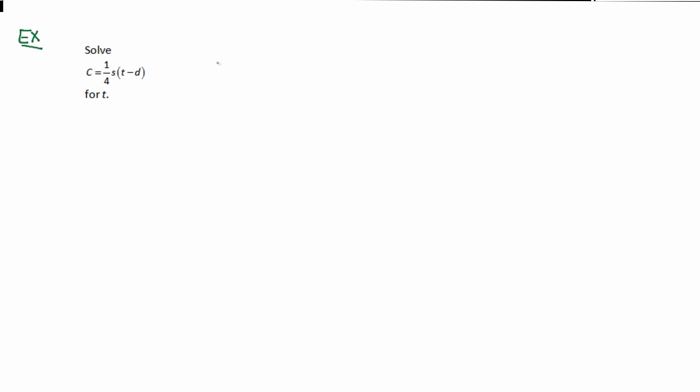In this video, we're going to go ahead and solve a formula for a stated variable here. In this case, we're going to solve C equals one fourth S times the quantity T minus D for the variable T. There's a lot of different kinds of formulas that you can solve for variables, and it's extremely useful to have this skill.